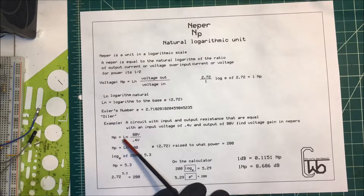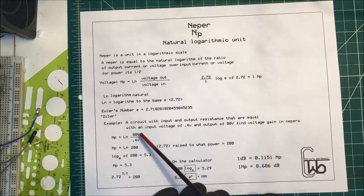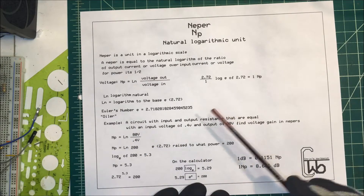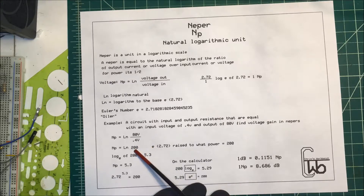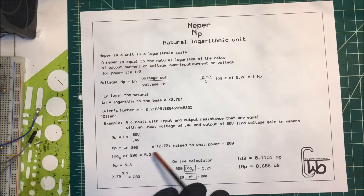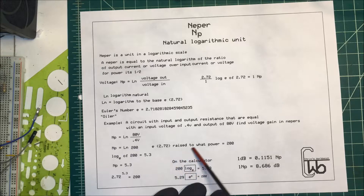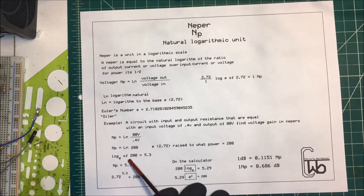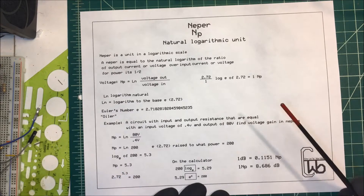So the Neper is equal to ln, or natural logarithm, times 80 volts divided by 0.4 volts. 80 divided by 0.4 is 200. We take the natural logarithm of 200. What that means is: e, which is 2.72, raised to what power equals 200? So we take log base e of 200, which equals 5.3. So we have a gain of 5.3 Nepers.